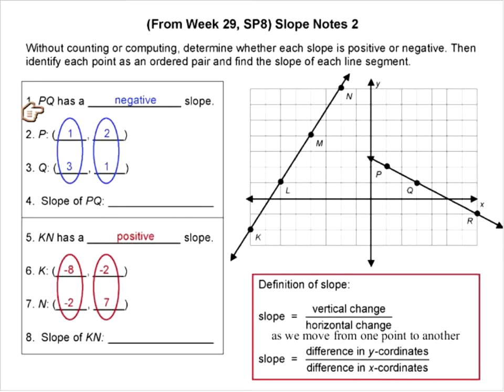And so for segment PQ right here, we can see what is the difference between the Y coordinates? If we go from P to Q. Well, you've got two minus one, then the difference here is one. And then if we look at the Y coordinates, the difference here is minus two. So what is the slope of segment PQ?